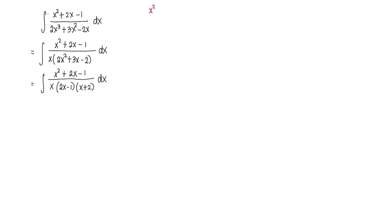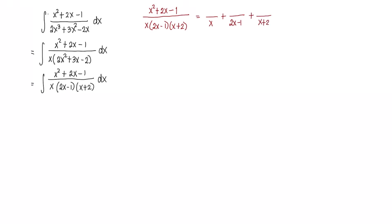Let's resolve this into partial fractions. We write x squared plus 2x minus 1 over x times 2x minus 1 times x plus 2 equals A over x plus B over 2x minus 1 plus C over x plus 2. For every linear denominator, there is a corresponding partial fraction with a constant in the numerator. We now solve for the values of these constants.